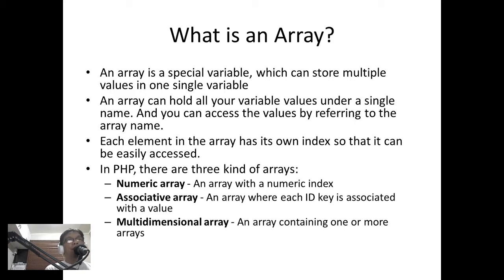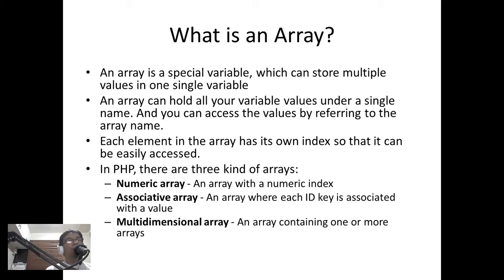The first is the numeric array, which is an array with a numeric index. The second is the associative array, where each ID key is associated with a value. The third is the multi-dimensional array, which is an array containing one or more arrays — essentially an array within an array.